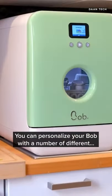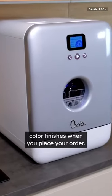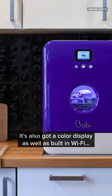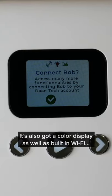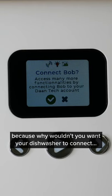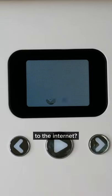You can personalize your Bob with a number of different color finishes when you place your order. It's also got a color display as well as built-in Wi-Fi, because why wouldn't you want your dishwasher to connect to the internet?